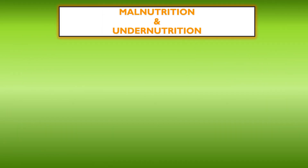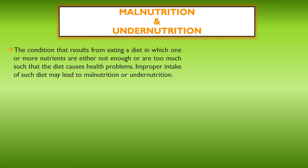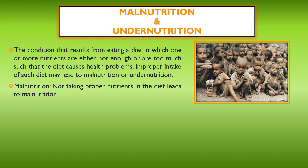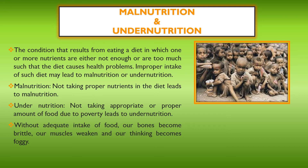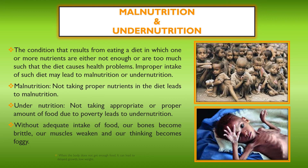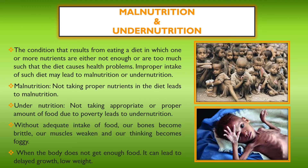Our next topic is malnutrition and undernutrition. Malnutrition is the condition where one or more nutrients are either insufficient or in excess, causing health problems. Malnutrition occurs when a person is not taking proper nutrients in their diet, while undernutrition refers to not taking an appropriate amount of food due to poverty. Without adequate food intake, our bones become brittle, muscles become weak, thinking becomes foggy, and it can lead to delayed growth and low weight.